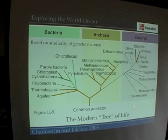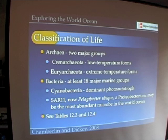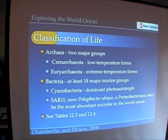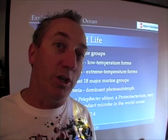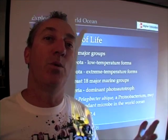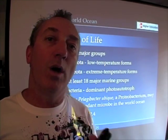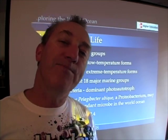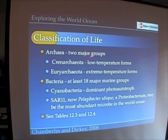So again, we can divide life on Earth into these three major groupings — what we call domains: the bacteria, the archaea, and the eukarya. Taking a closer look at each group, the archaea are composed of two different types: the extreme-temperature forms, called the euryarchaeota, and the low-temperature forms, the crenarchaeota. I won't make you remember those names, but as long as you have some sense of where archaea occur and why they're important, that's the key to understanding this particular group.